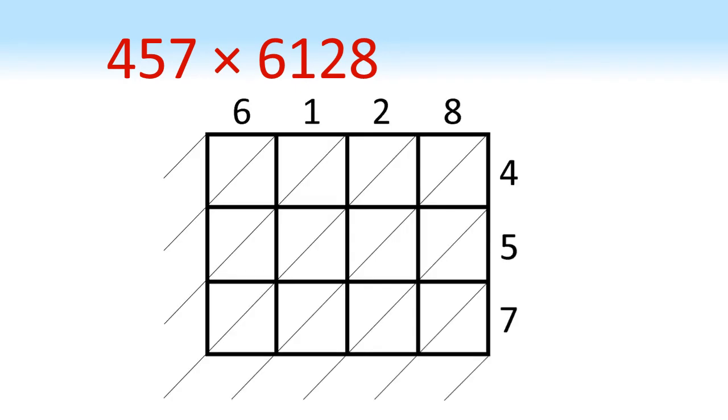We're now going to use the same method but for a larger sum, so 457 times 6128. Again we've got our grid. Doesn't matter which way around we put the numbers. I put the four-digit number at the top, and we go through each square multiplying the top number by the right hand number.